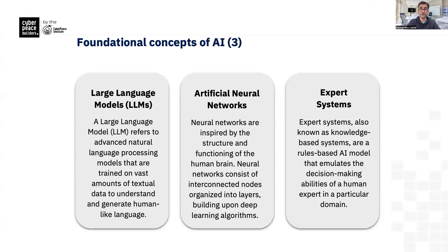Neural networks, as we've seen, are structured around the way the human brain actually functions — a set of interconnected nodes organized into layers, building upon deep learning algorithms. And finally, expert systems use rules to make decisions, just like a human expert would.